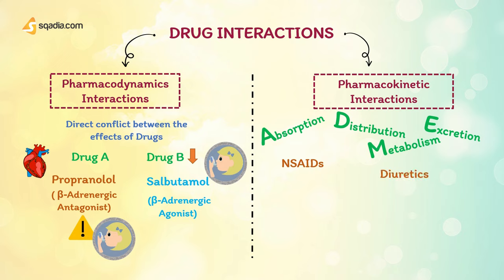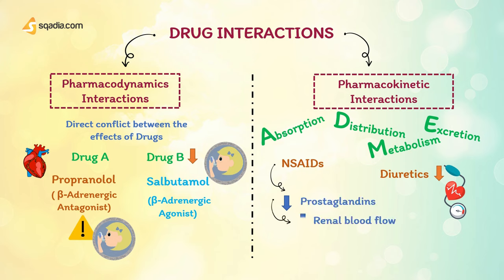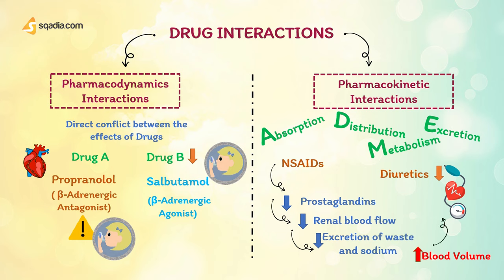If administered with diuretics, non-steroidal anti-inflammatory drugs, NSAIDs, will reduce the antihypertensive action of these drugs. NSAIDs bring about this effect by reducing prostaglandin synthesis in the kidney, thus impairing renal blood flow and consequently decreasing the excretion of waste and sodium. This results in an increased blood volume and a rise in blood pressure.